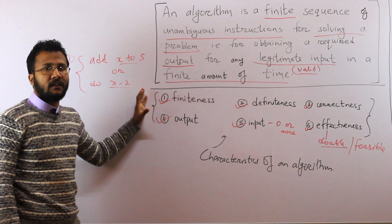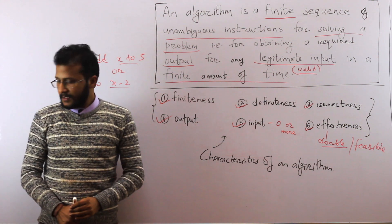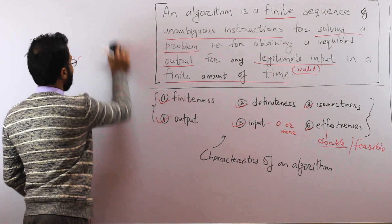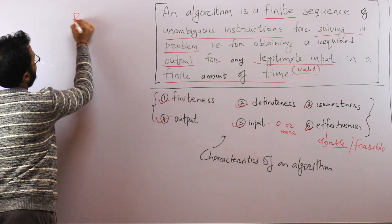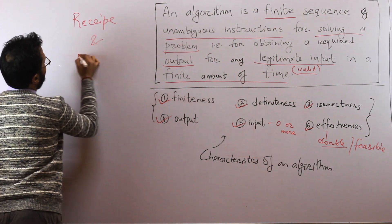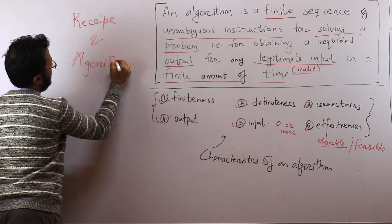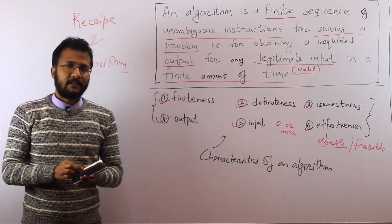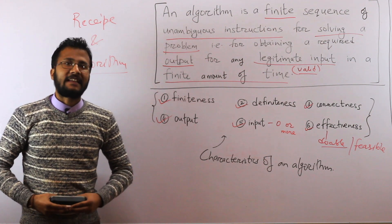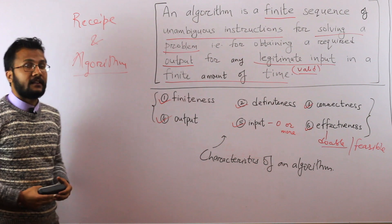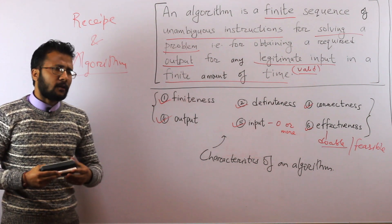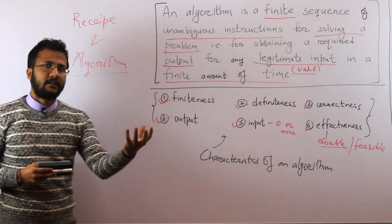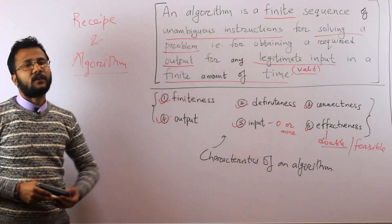Now let me give a brief description about the difference between a recipe and an algorithm. Suppose you are asked to prepare a cup of tea — you'll find a recipe for it online. A recipe for tea might say: take a pot, add some water or add one cup of water, boil it for some time, then add some sugar.